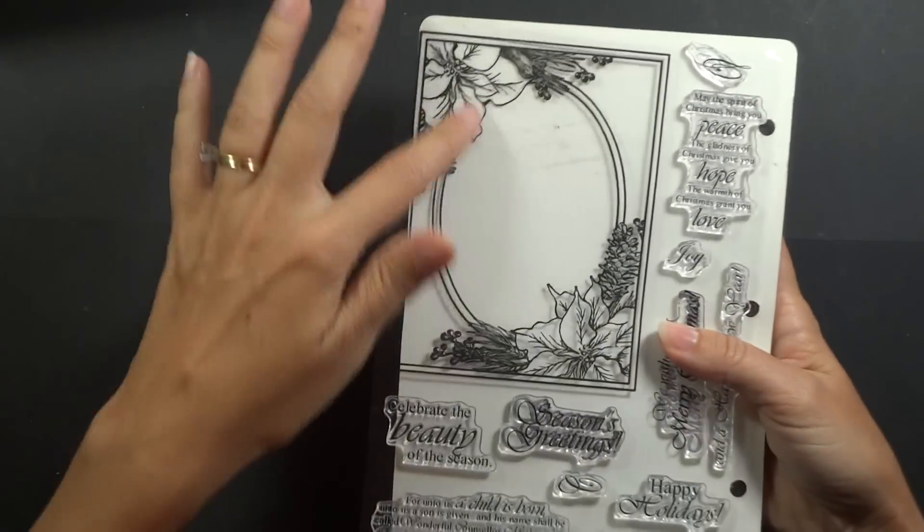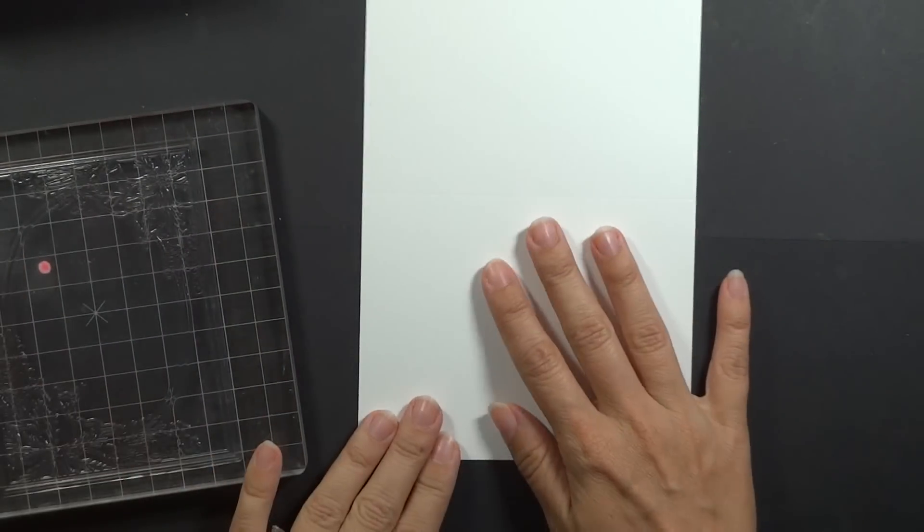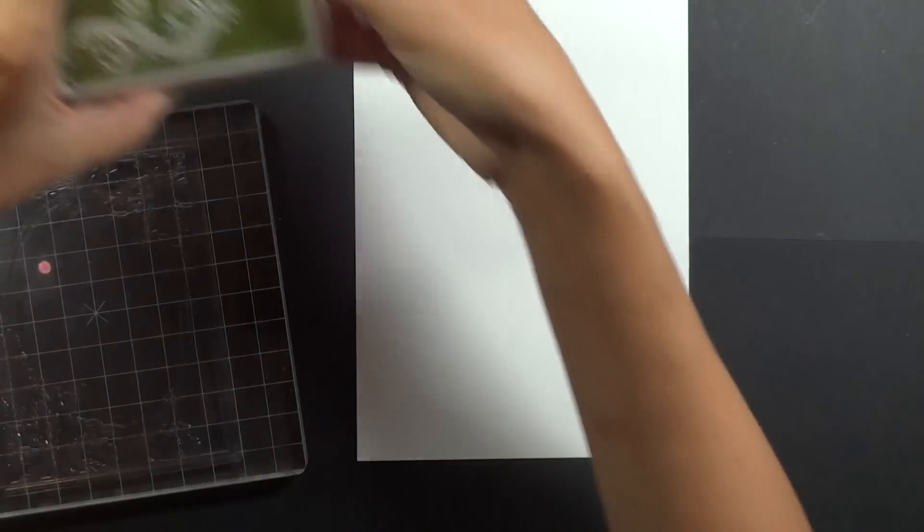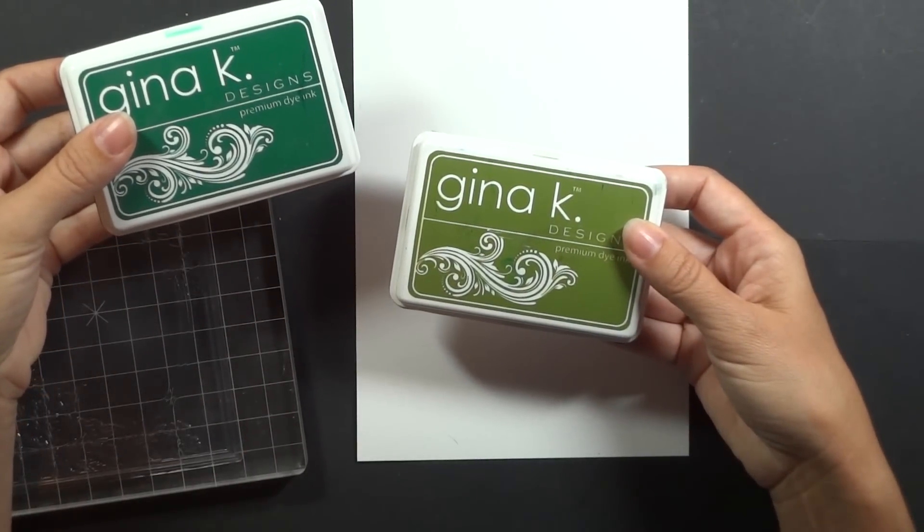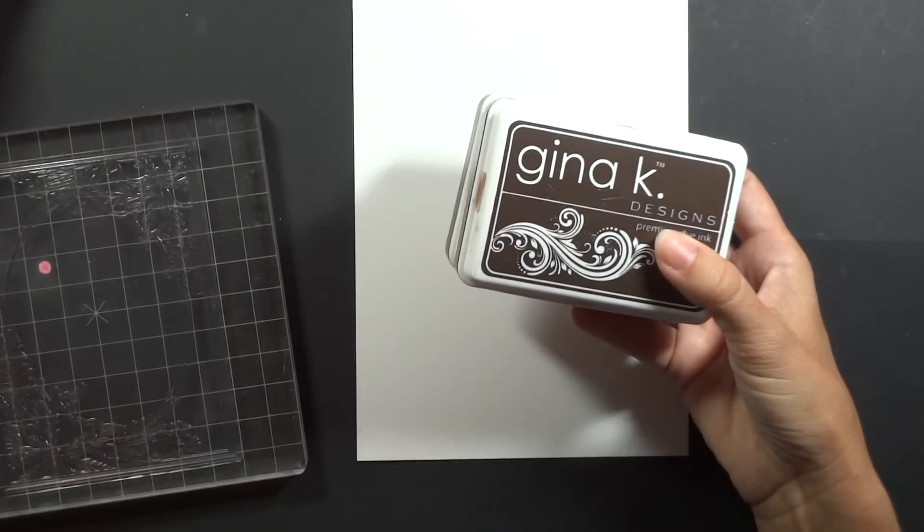The first one that we're going to do is the Festive Frame one. So this is an A2 size frame that you can use in four different directions on your cards. I've got the measurements posted for this white card below. The ink pads I'm going to be using today, I've got the fresh asparagus, the Christmas pine, the dark chocolate, and then the black onyx for a greeting.